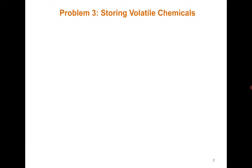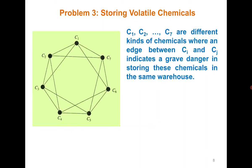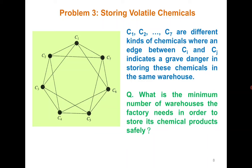One more problem: let C1, C2, ..., Cn be different kinds of chemicals, where an edge denotes grave danger if two chemicals are stored together. The problem is: what is the minimum number of warehouses a factory needs to store its chemical products safely? Putting each in a separate warehouse would work, but that is not optimal — we need the minimum.